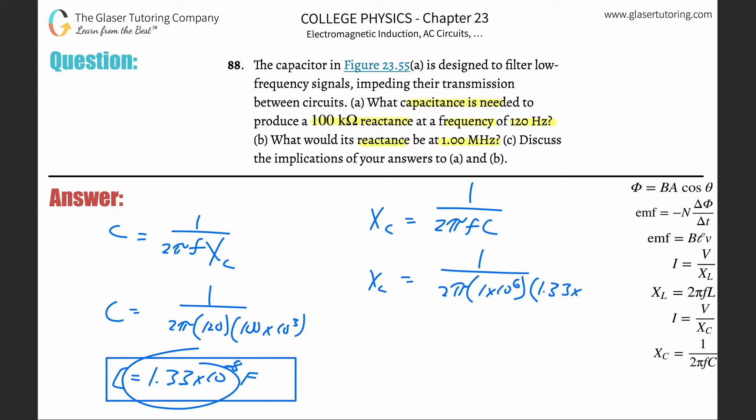The capacitance is 1.33 times 10 to the minus 8. When I actually do the calculation, I'm going to use the exact value from the calculator. So 1 divided by parentheses 2π times 1 times 10 to the 6th times that exact answer from before, and we get basically 12 ohms.